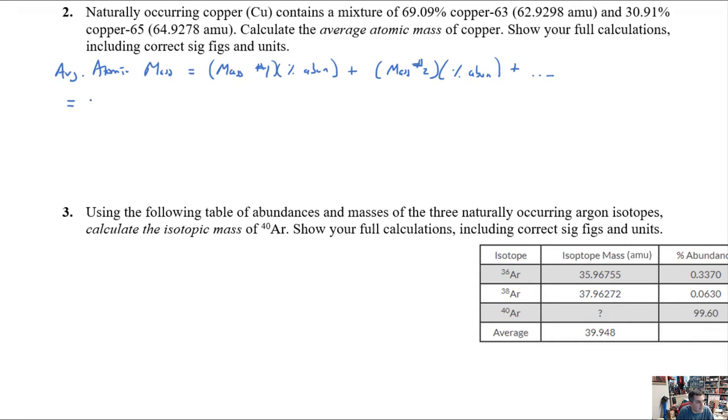And so we're going to say we're going to get the average atomic mass. And the equation is what? It's going to be equal to the mass of isotope number one times its percent abundance, plus the mass of isotope number two times its abundance as well, and so on and so forth, depending on how many you have. Now, fortunately here, we only have two, so this is really easy.